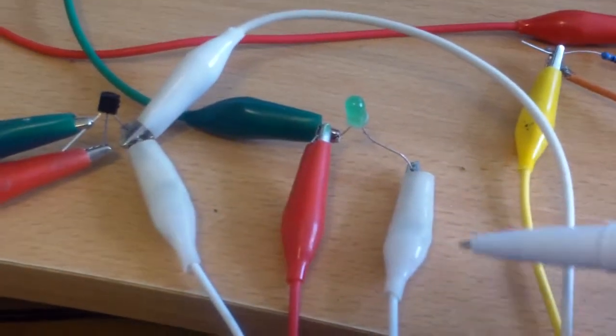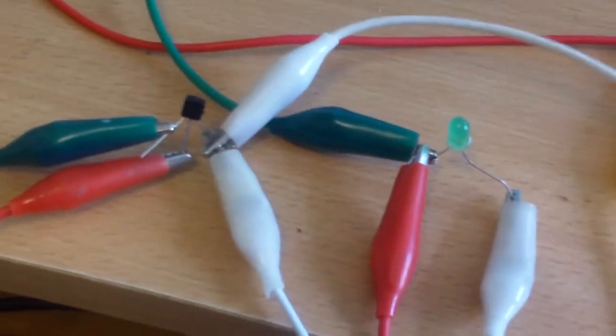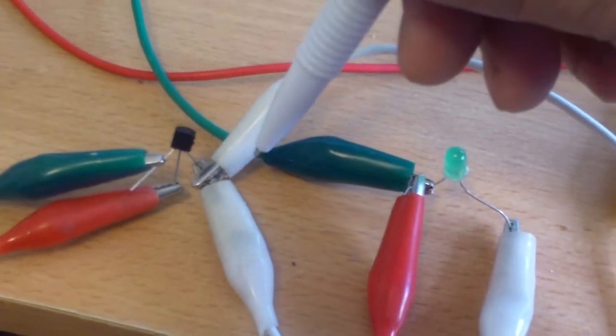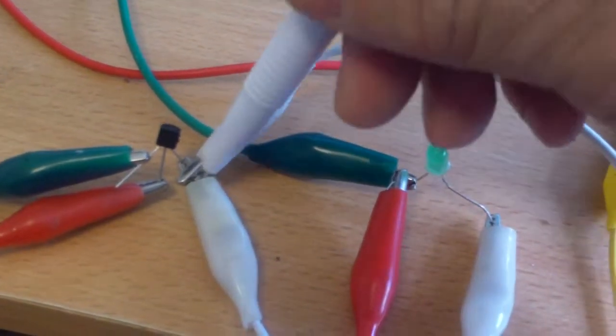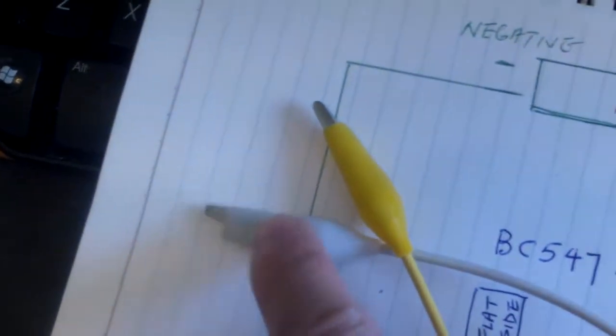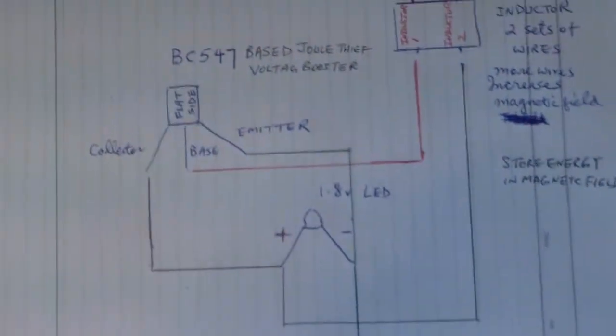So you can do that with a piece of wire. And then another connection to the emitter, you can use a piece of wire and connect it to the negative of your battery. So it's the same thing with the circuit here.